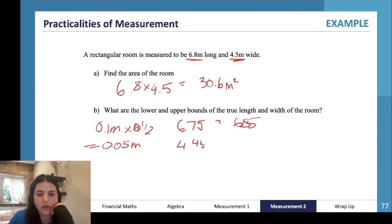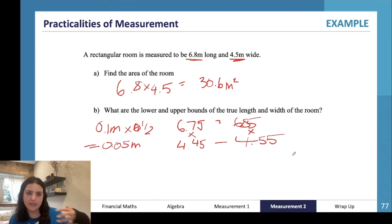And our width is going to be 4.45 to 4.55. And then if the third question was what is the lower and upper bounds of the true area of the room, you would be doing 6.75 times 4.45 and then 6.85 times 4.55, because that's representing theoretically how small and how big the room could actually be.